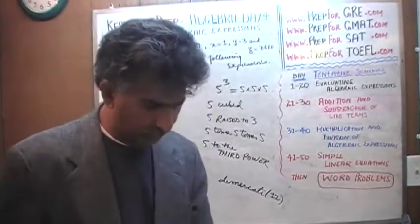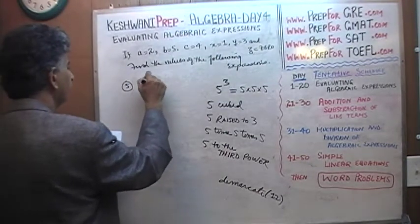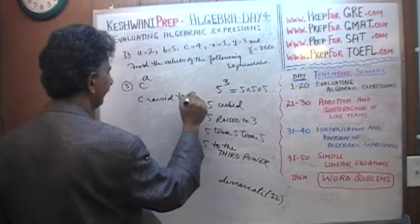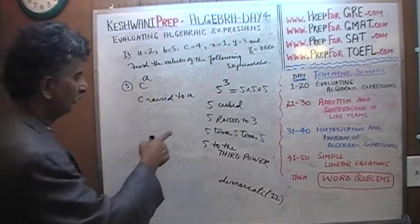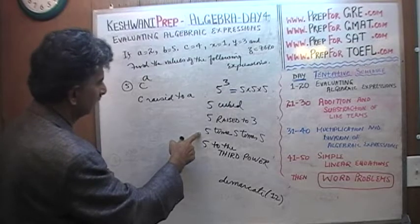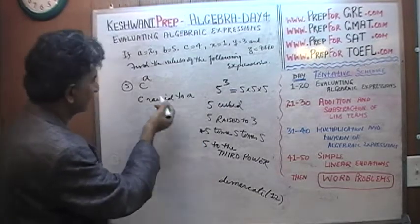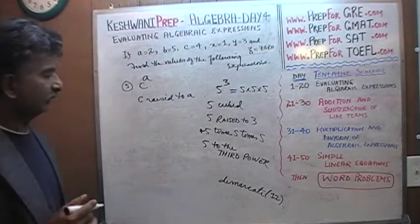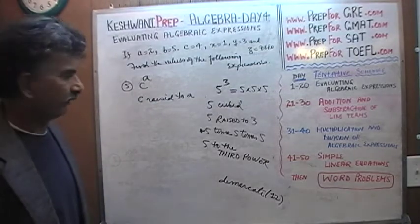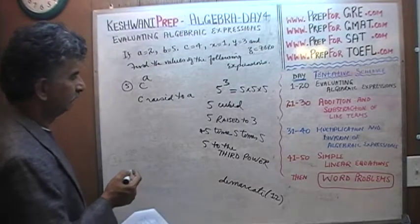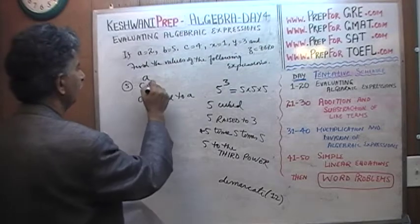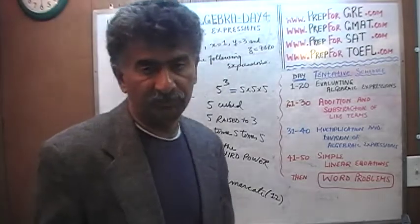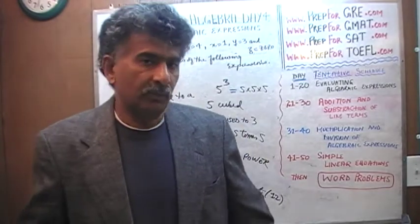Number five is this. How do we read it? This can be read as c raised to a. If you want to read this way, it's tricky because we don't have the value for a, so you'd have to say c multiplied by itself a times. But you wouldn't read it like that because it's very awkward, very cumbersome. So we read it as c raised to a. How much is c? C is 4. How much is a? A is 2. C raised to a turns out to be 4 raised to 2. Four raised to 2, because it's only 2, we can read it as 4 squared or 4 times 4, which is 16.